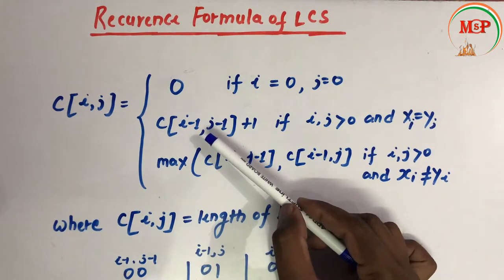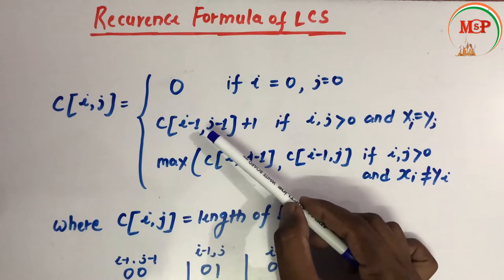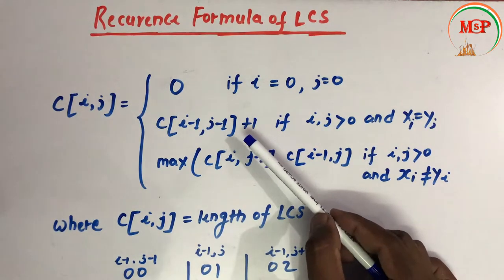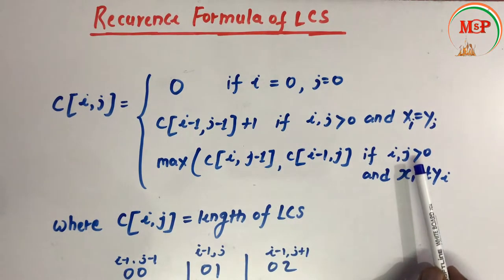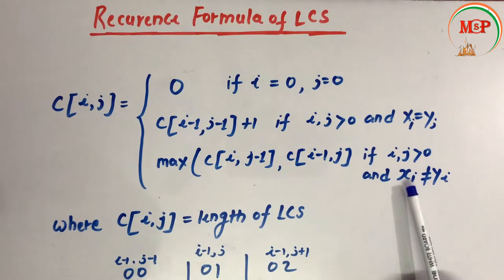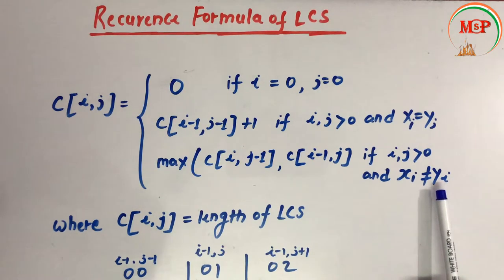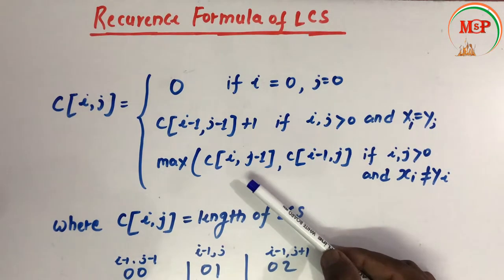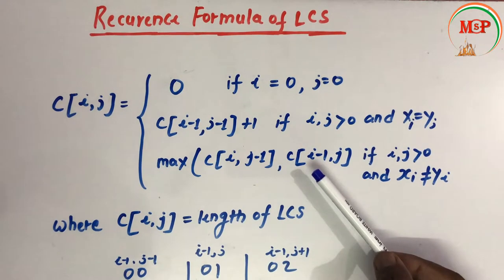That diagonal element will be plus one. Otherwise, if i and j are greater than zero and the element from the x set does not match the y set element, then we choose either the value from the left side or the value from above, and whichever is the maximum value we choose one of them.